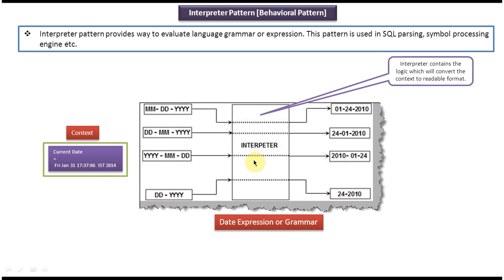So what the interpreter will do is it will interpret the context date value and convert it to the mmddyy format. So you will get like this. Basically, the interpreter contains the logic which will convert the context to the readable format.